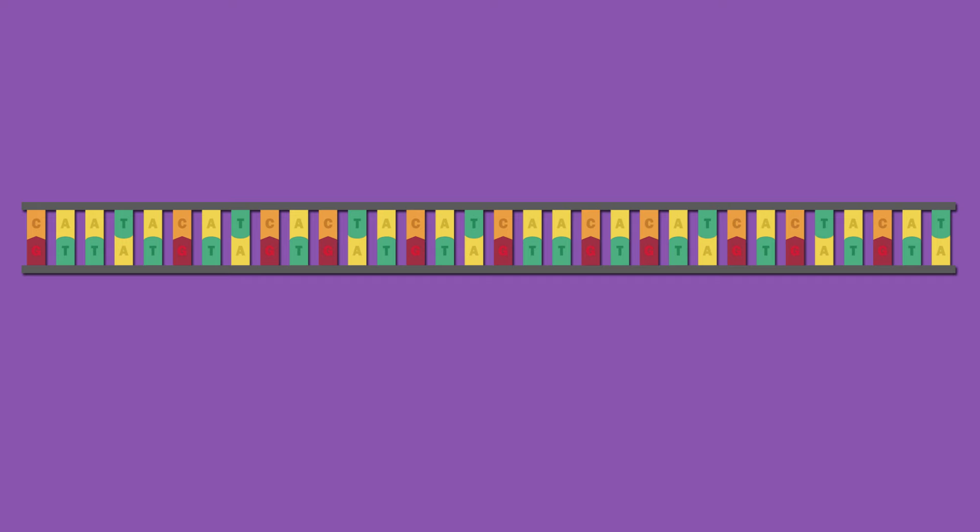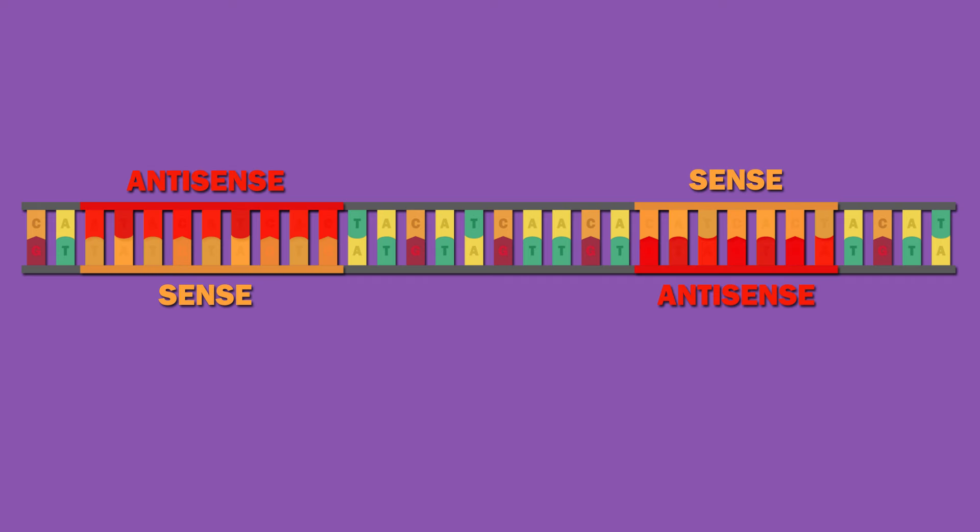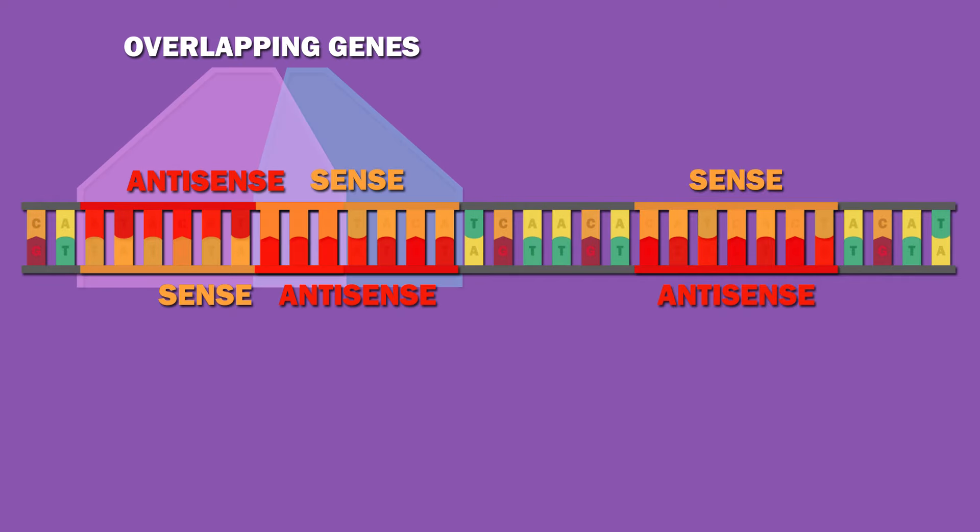Note that both strands of DNA can have sense and antisense sequences. Furthermore, sense and antisense sequences can overlap. For example, there can be overlapping genes where one protein is encoded on one strand and another is encoded on the opposite strand by the sequence read in the opposite direction.